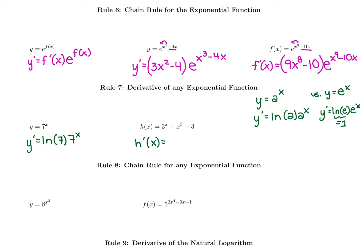This one for h(x) is tough to recognize at first. We have 3^x — x is up in the exponent — so we do ln(3) times 3^x. Then we have x³: x is now in the base with a number exponent, so we bring down that power: derivative of x³ is 3x². Lastly, we have the constant 3, and the derivative of a constant is 0. I'm labeling the constants to make sure we recognize them — that's why we don't write a derivative for them.